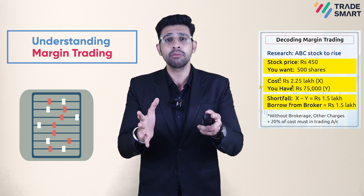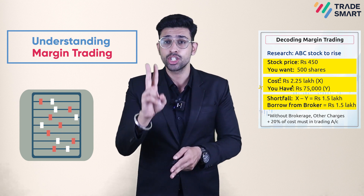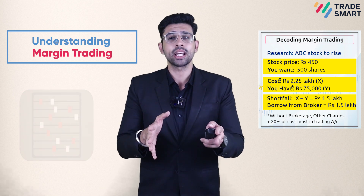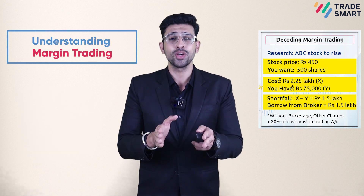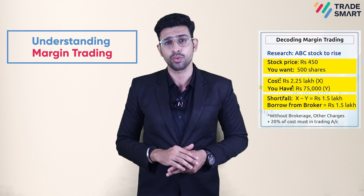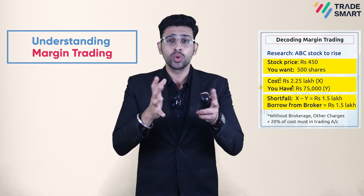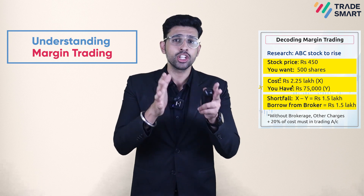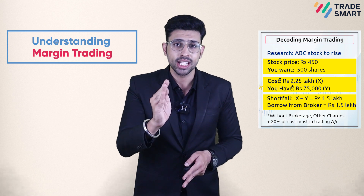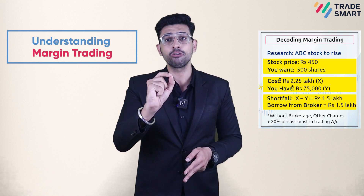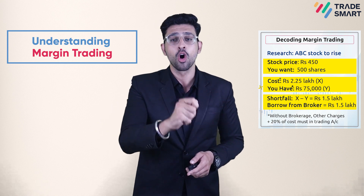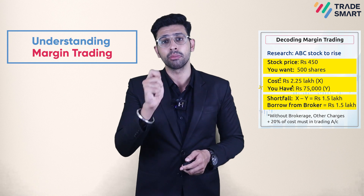Generally, the trader must bring in at least 20% from his side. In our example, let's say you have Rs. 75,000 credit in your margin trading account. You can use your margin trading account to buy the entire 500 shares, as the balance of Rs. 1,50,000 can be funded or borrowed from the broker.